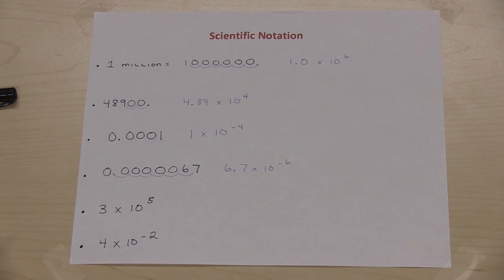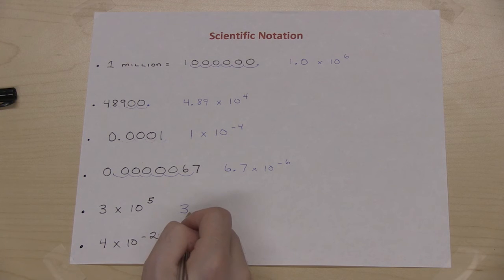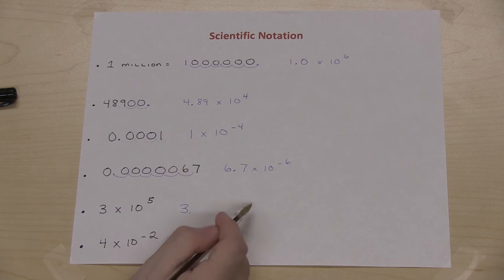We can also go the other way, so if I have 3 times 10 to the fifth, I can do that by taking the number 3, putting the decimal point, and then moving it five places. Because it's a number bigger than 1, I'm going to move the decimal this way.